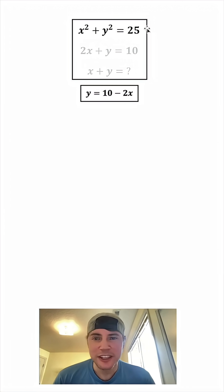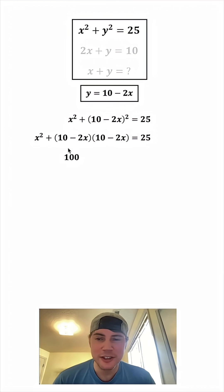Next, let's focus on the X squared plus Y squared equals 25. Let's bring it down, and in the place of this Y right here, I want to plug in 10 minus 2X. So now this is 10 minus 2X being squared, so we're going to multiply 10 minus 2X times 10 minus 2X. 10 times 10 is 100. 10 times negative 2X is negative 20X.